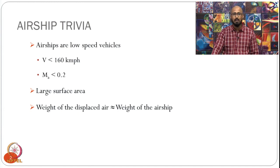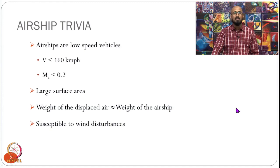Because airships are buoyant, the weight of the displaced air is nearly equal to the weight of the airship. So you could say that the net resultant weight of the airship is approximately zero. We also know that they are susceptible to wind disturbances — they are very sensitive to wind and weather conditions.